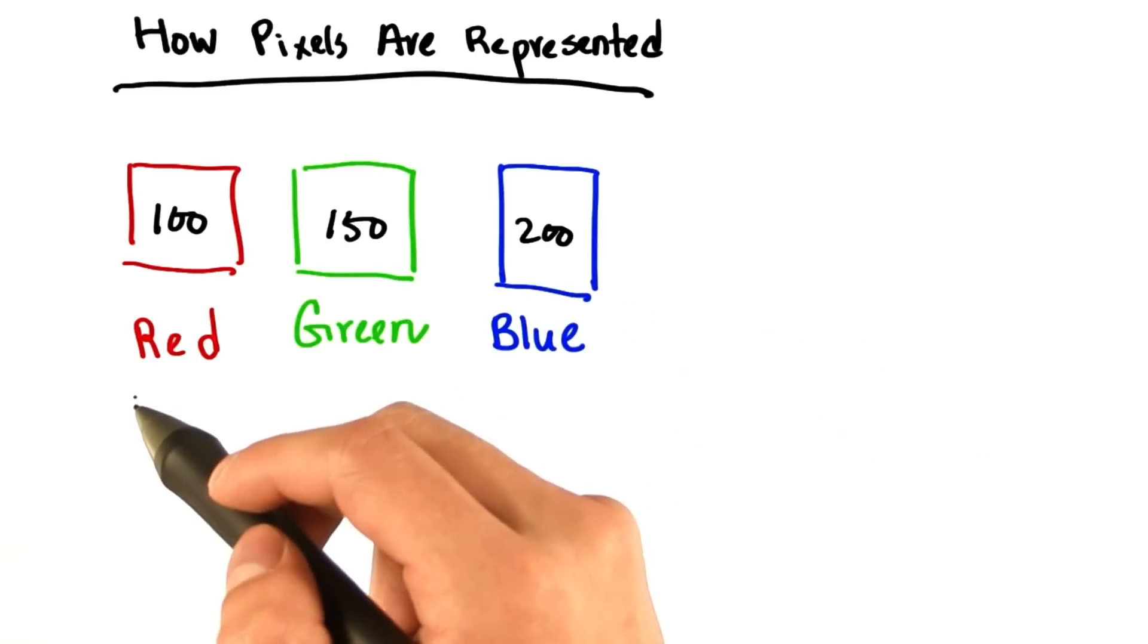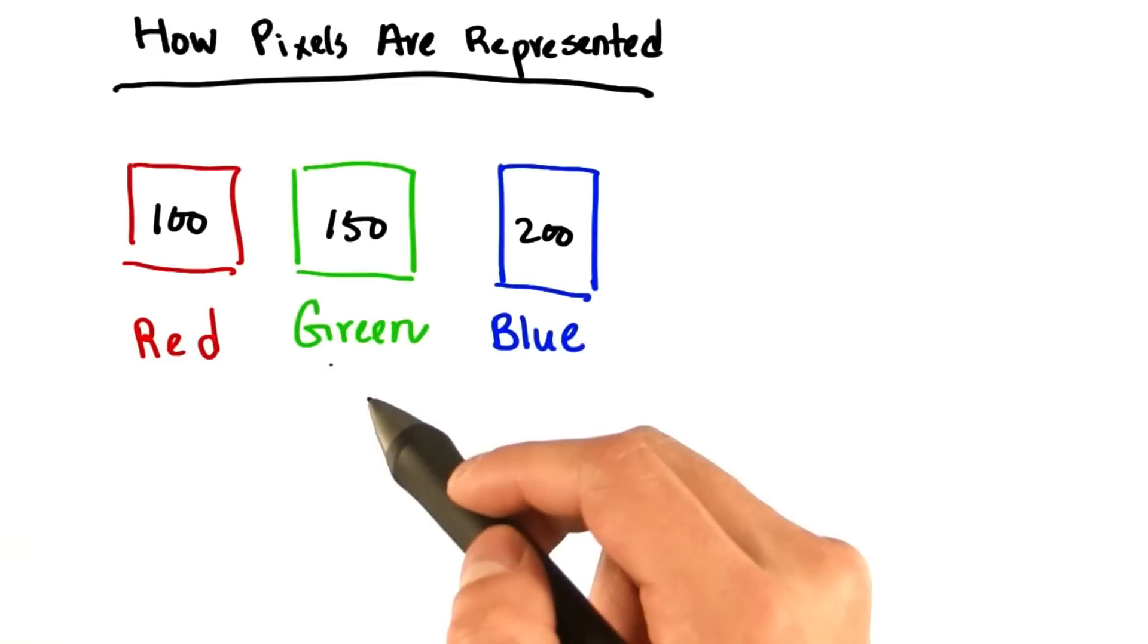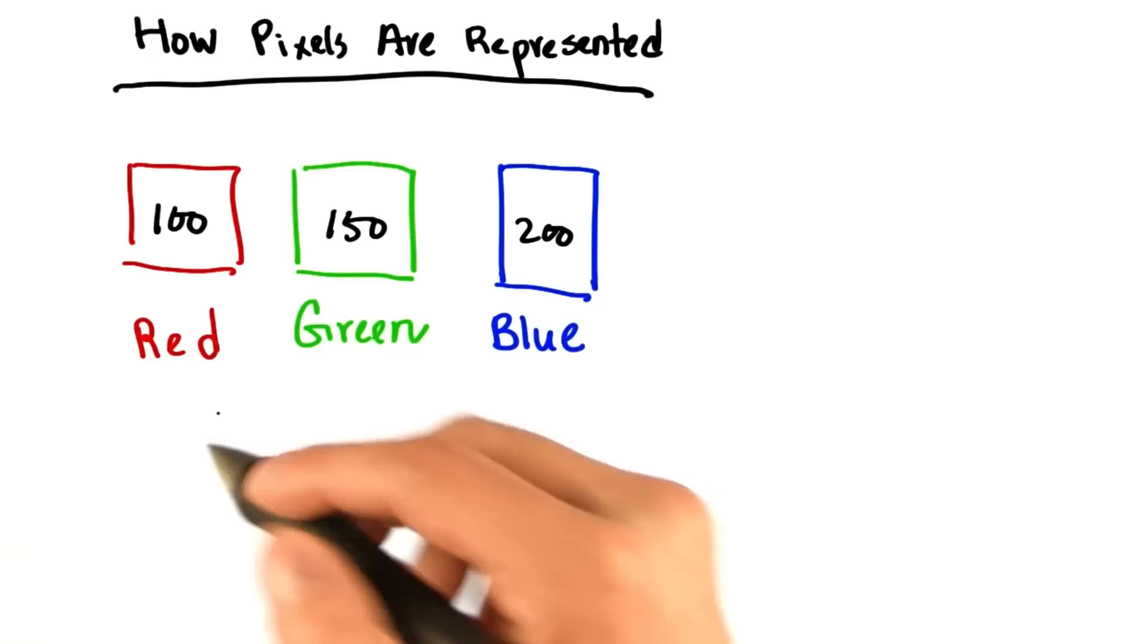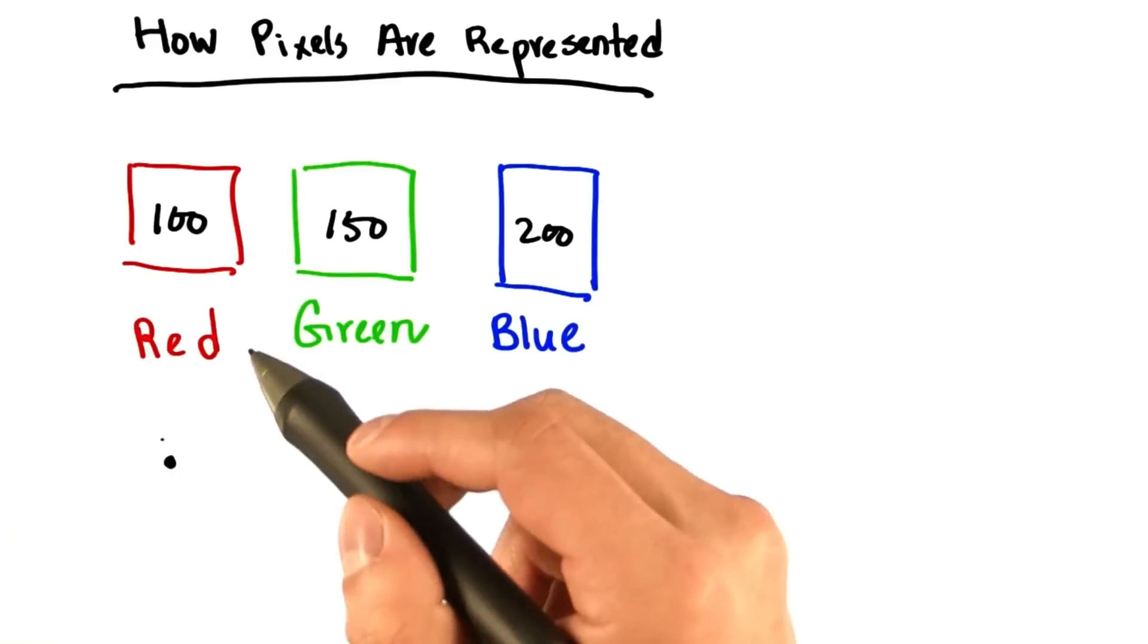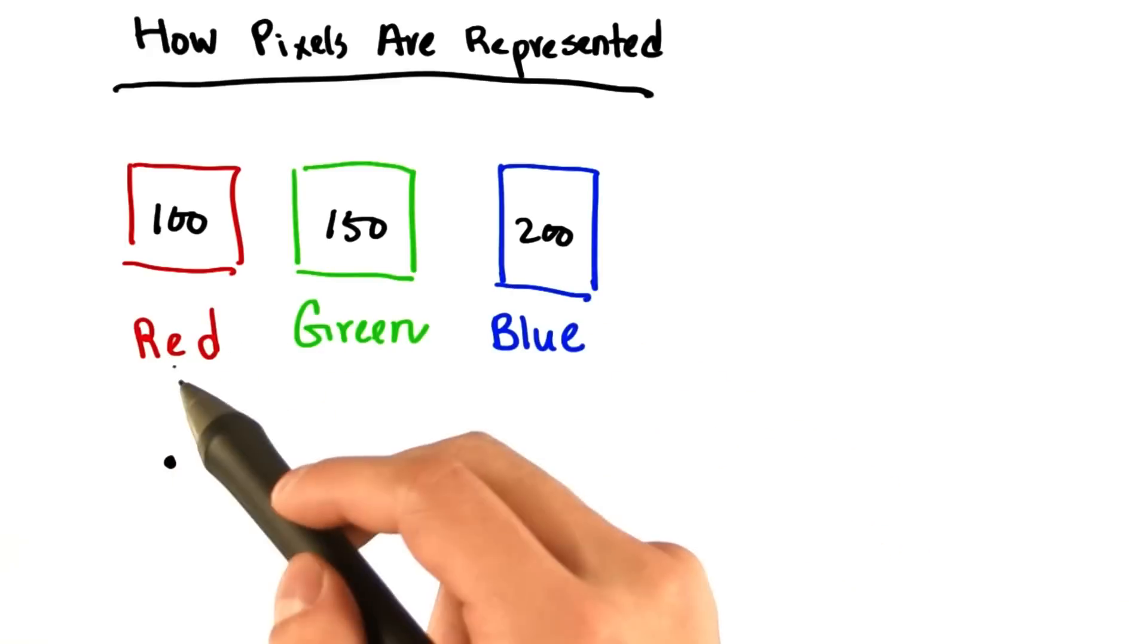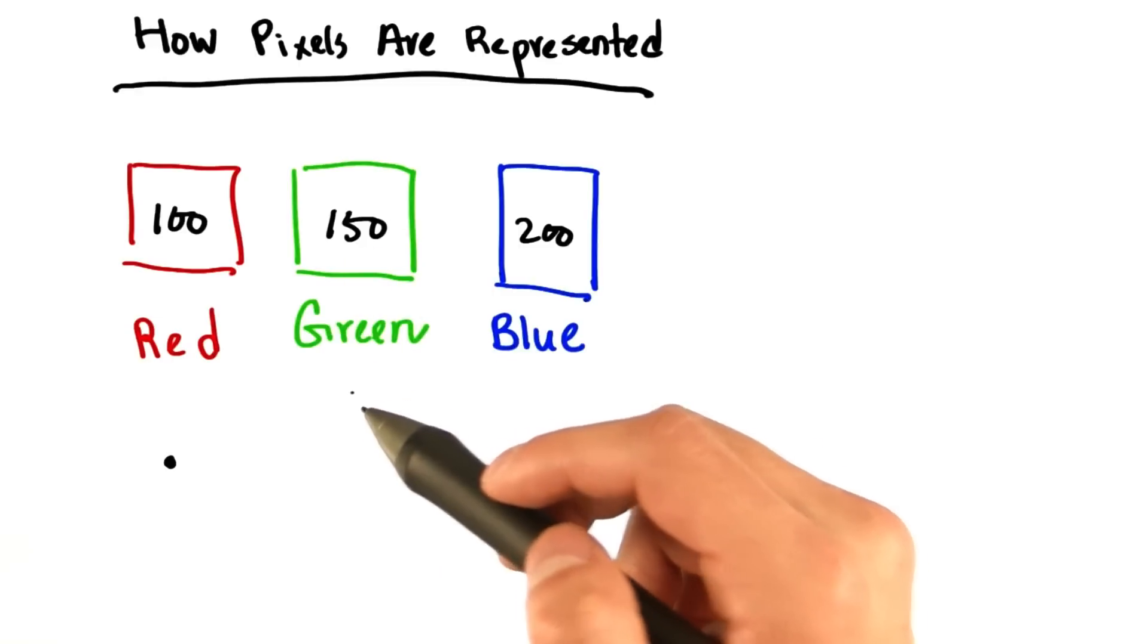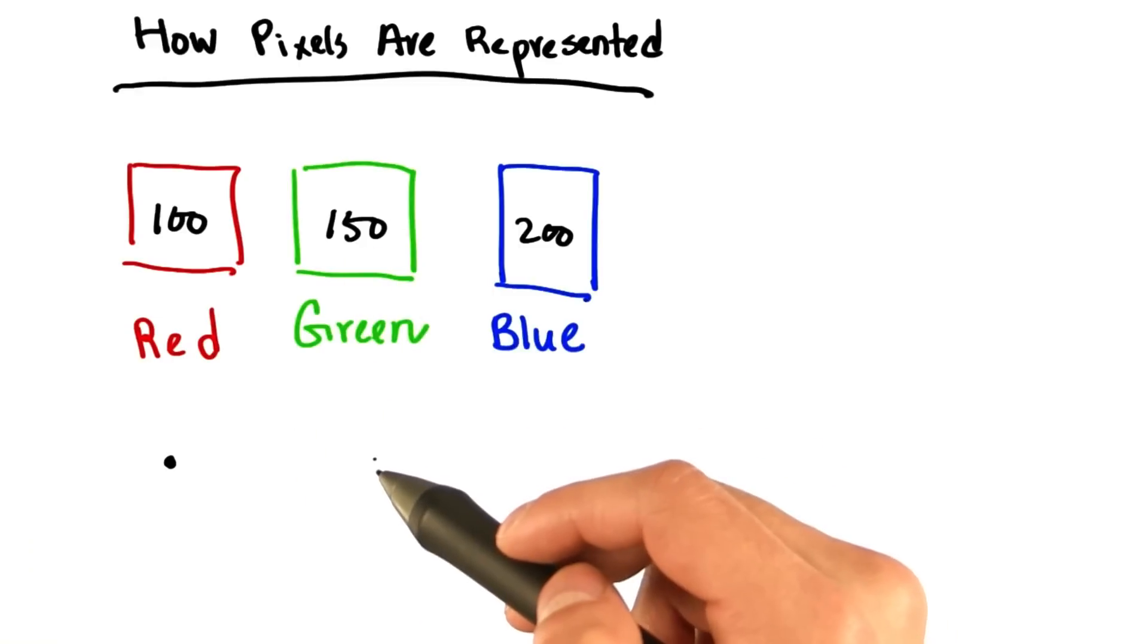Therefore, if at a pixel all three channels - red, green, and blue - are zero, that pixel is black. Or if all three channels are 255, that pixel is fully white, just like the background of the slide.